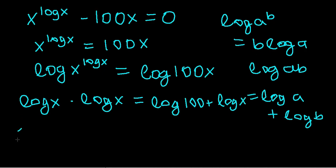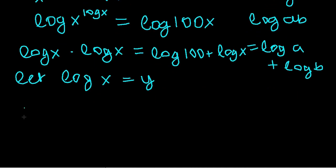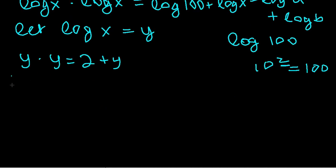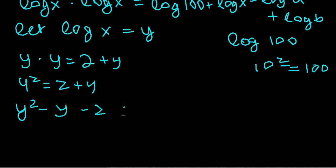We can make this a quadratic equation by letting y equal log x. Then y times y equals log 100 plus y. Since log 100 equals 2 (because 10 squared is 100), we get y squared equals 2 plus y, which gives us y squared minus y minus 2 equals zero.